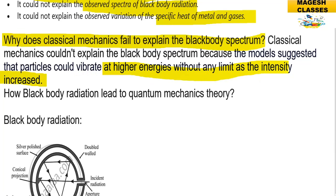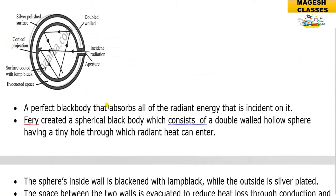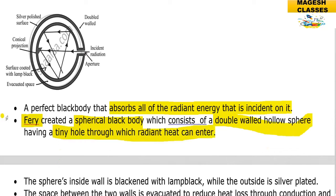A perfect black body is one that absorbs all of the radiant energy incident on it. It was created by the scientist Ferry — a spherical black body which consists of a double-walled hollow sphere having a tiny hole through which radiant heat enters. The sphere's inside wall is blackened with lamp black coating.